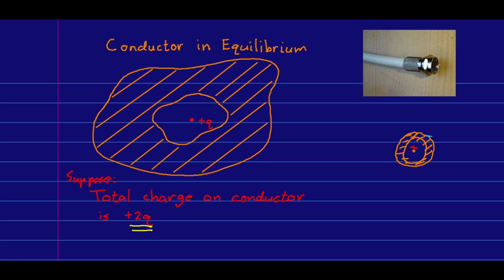Here is a conductor in equilibrium with a cavity inside it. The hashed part is the conductor, and the gap contains a charge of plus Q in the middle. Additionally, the conductor itself has been charged with a total charge of plus 2Q. Let's think about a Gaussian surface drawn entirely inside the material of the conductor. The flux through this surface has to be zero because the E field is zero everywhere in the conductor material. But there's a plus Q charge inside, so because the flux is zero, the total charge inside the surface must be zero — meaning there must be a minus Q somewhere. It can't be inside the material, so it must be on the inside surface of the conductor. There is a total charge of negative Q on the inside surface.